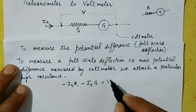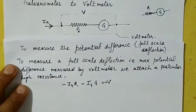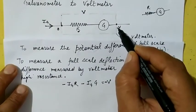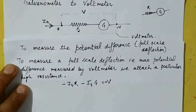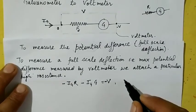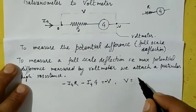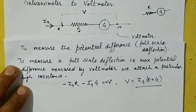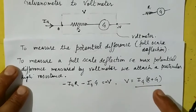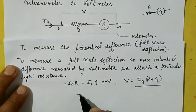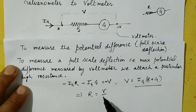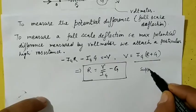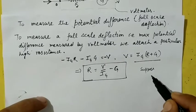The maximum value of the voltmeter reading is V. From zero to V, the potential decreases, so we get: V = IG × (R + G). From this we can calculate R: R = V / IG − G.